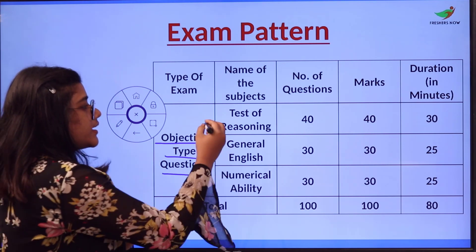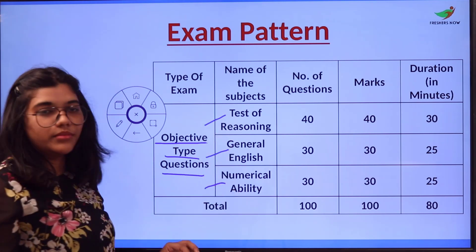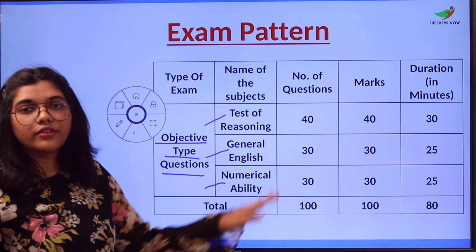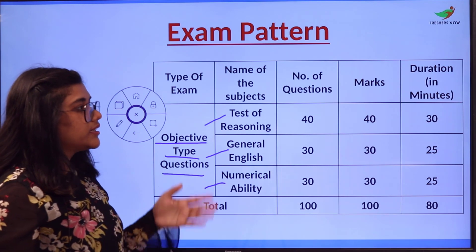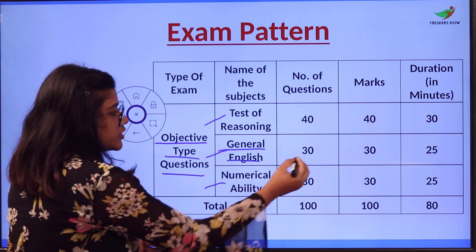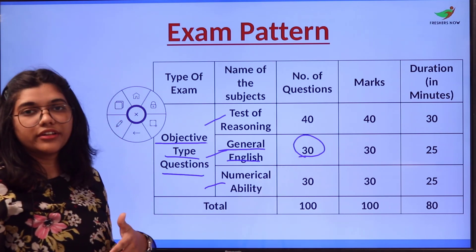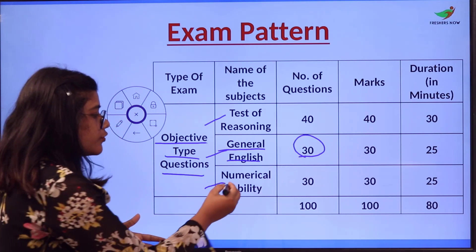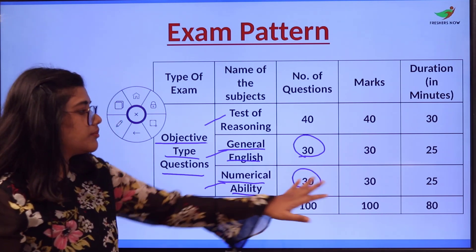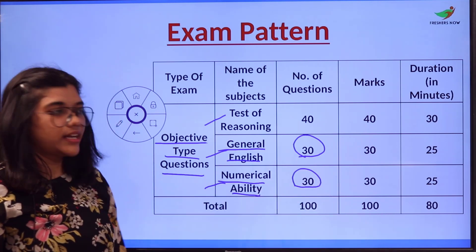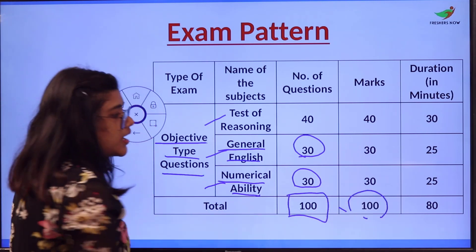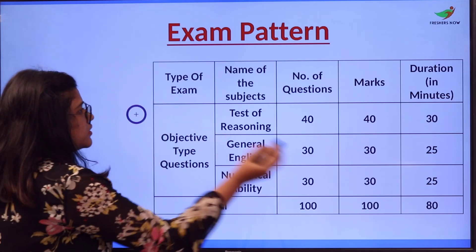general English, and numerical ability. The number of questions for test of reasoning are 40 with 40 marks in 30 minutes. For general English, there will be 30 questions with 30 marks and 25 minutes time limit. For numerical ability, 30 questions with 30 marks and 25 minutes duration. In total, we have 100 questions carrying 100 marks under 80 minutes.